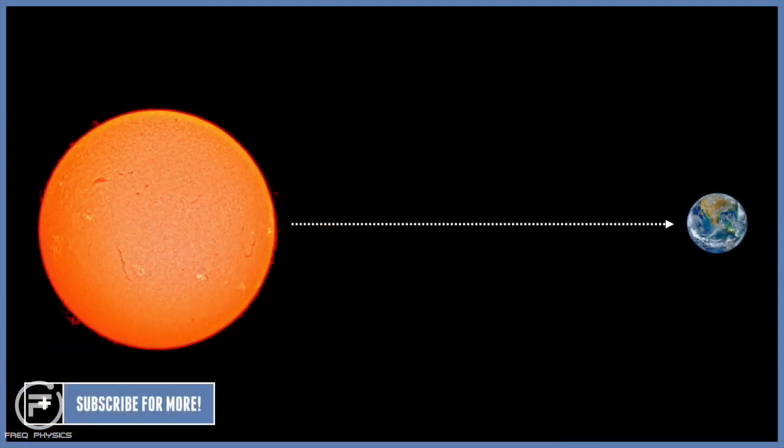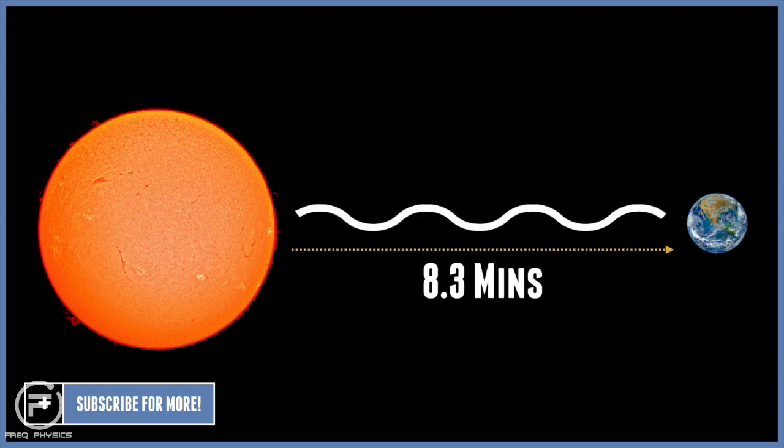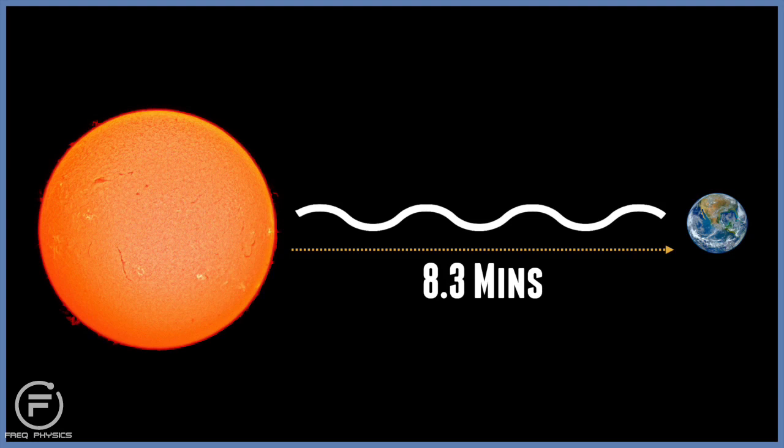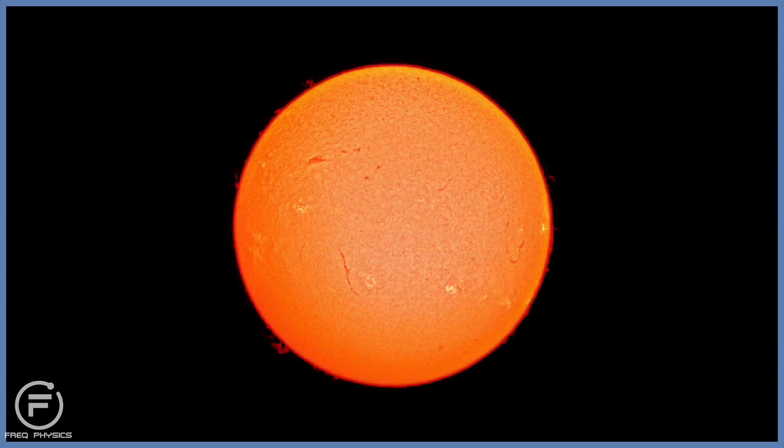The Sun is 93 million miles away, so this means that it takes 8.3 minutes to get to Earth. This means that when we look up at the Sun, we see it as it was 8 minutes ago. So if the Sun would suddenly disappear from the solar system, the people on Earth wouldn't quite know it for another 8 minutes.